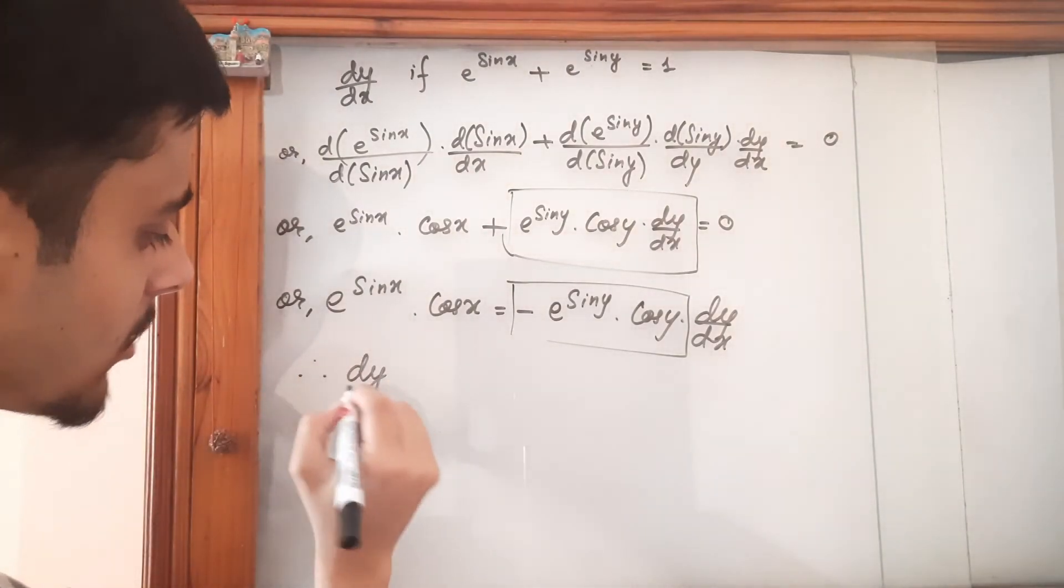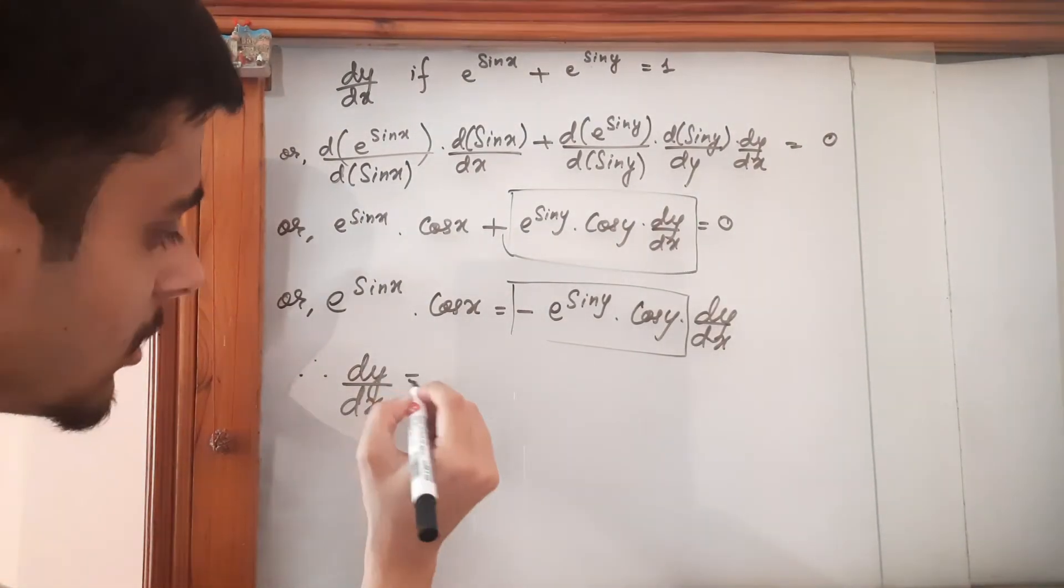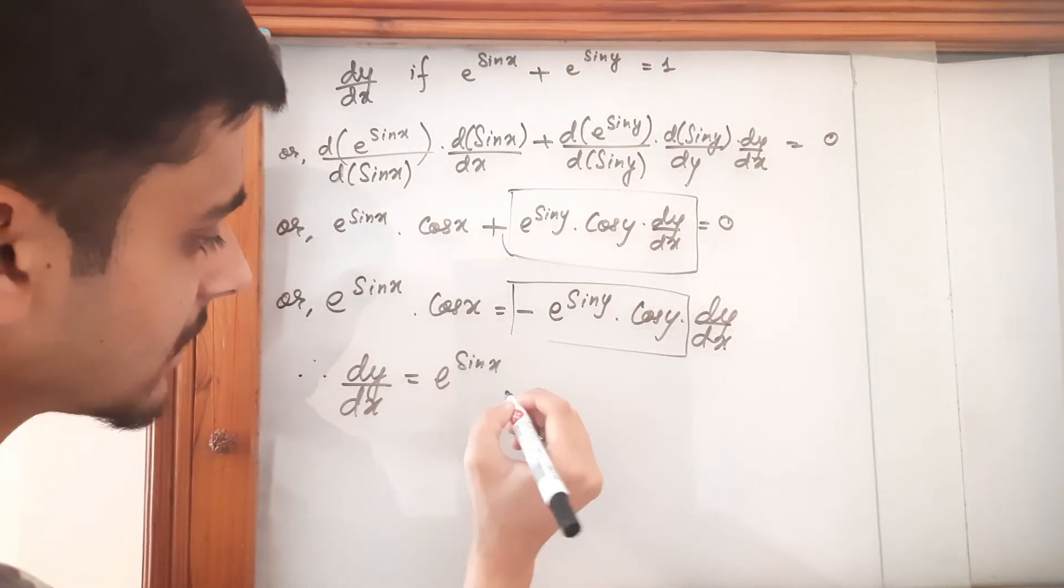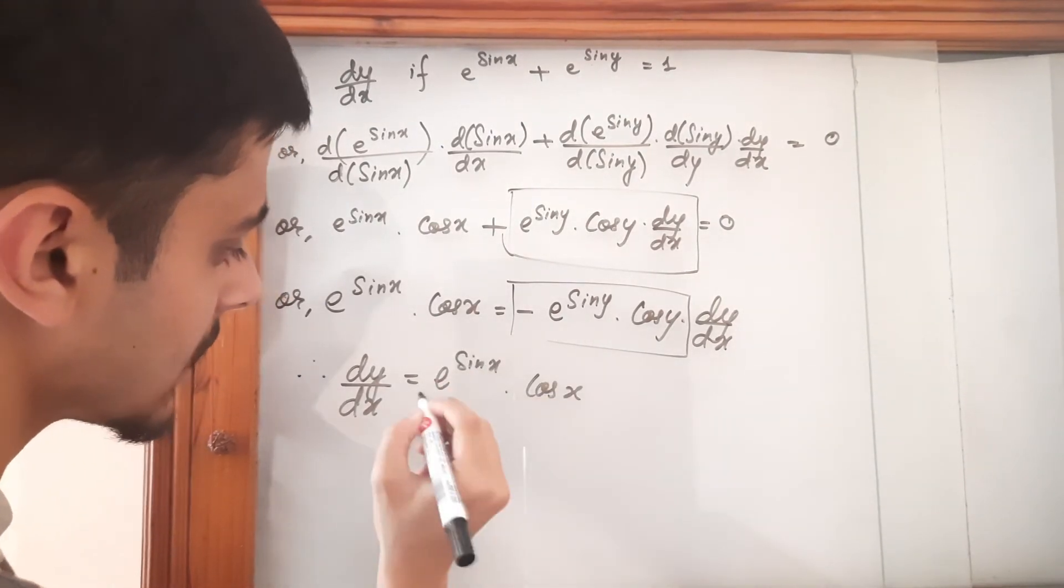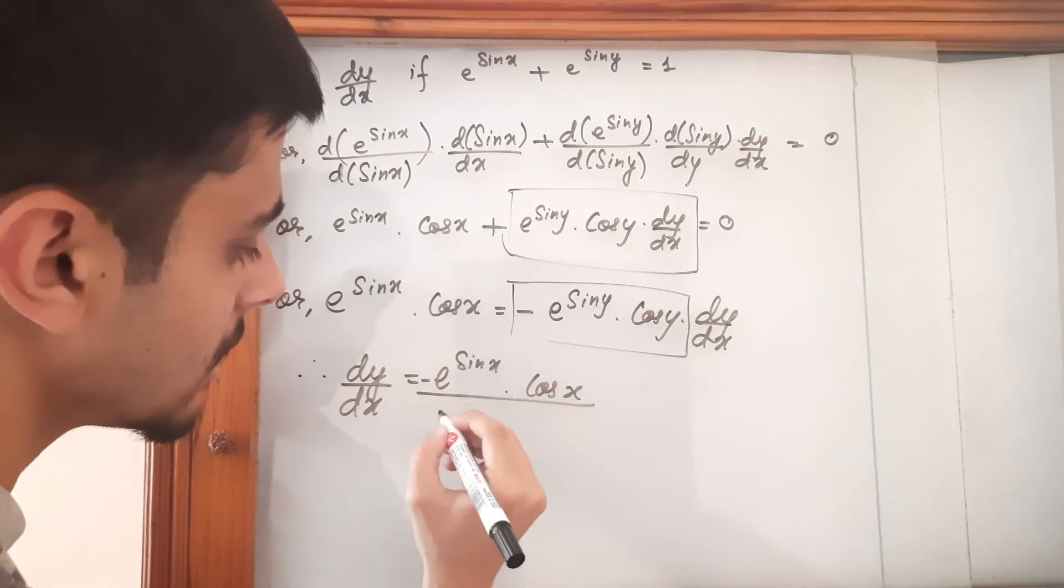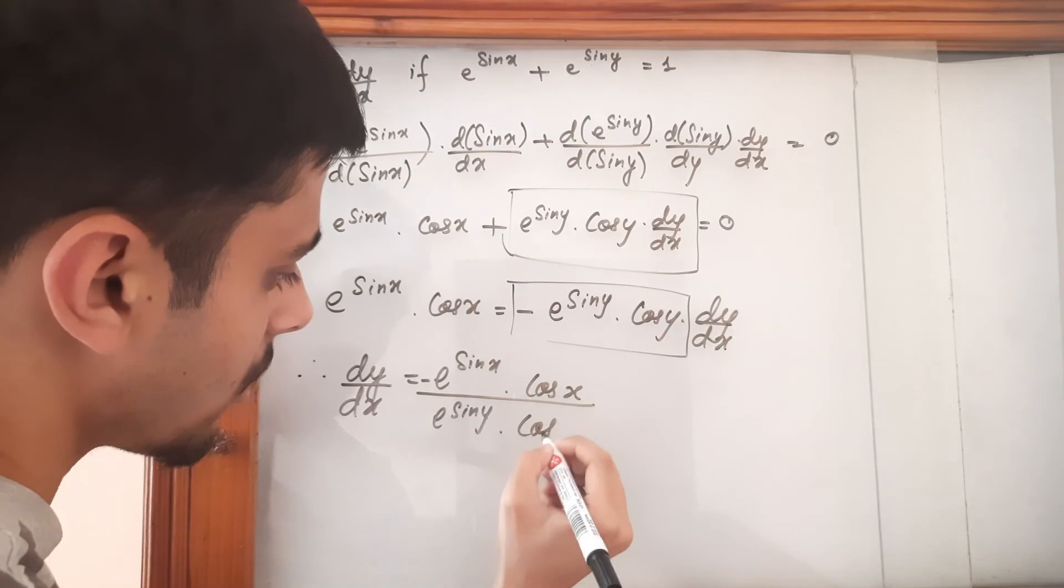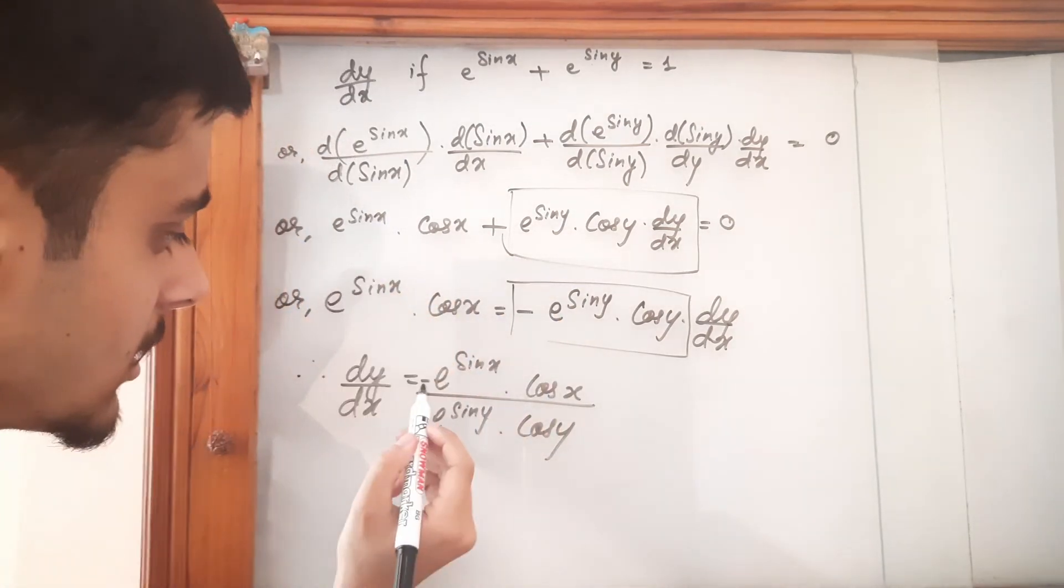Therefore dy upon dx is equal to e to the power sine x times cos x upon e to the power sine y times cos y. This minus goes over here, so minus.